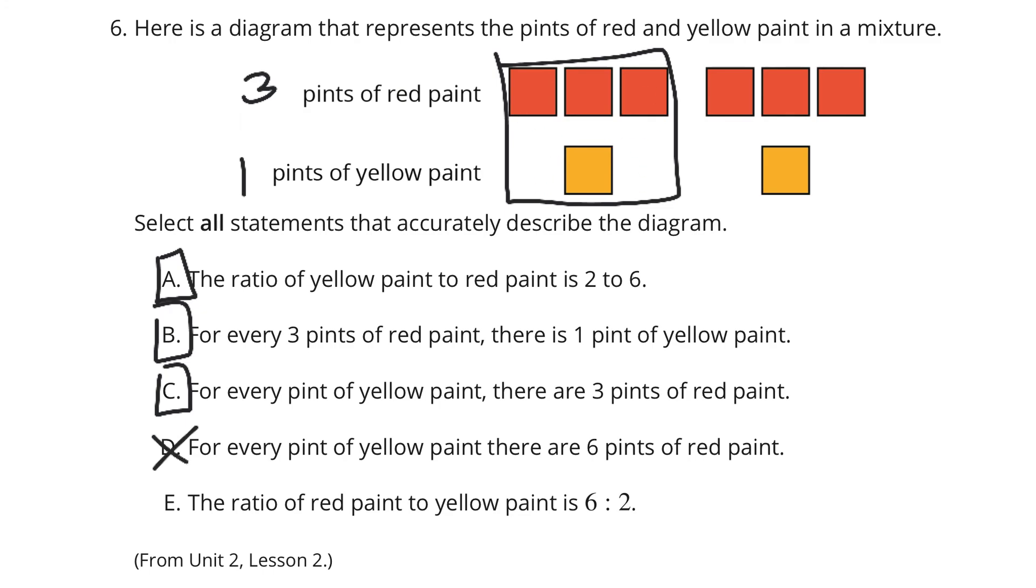We just said it was one to three. So D is false. And E, the ratio of red paint to yellow paint is six to two. Six red, two yellow, red, two yellow, six, two. Those orders match, numbers match. You're good there. So A, B, C, and E are your correct answers.